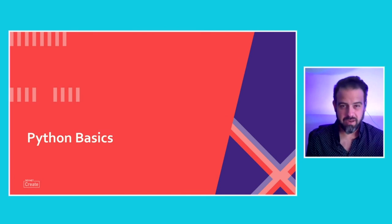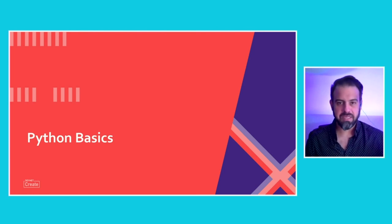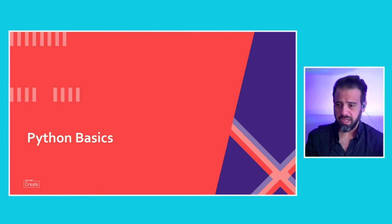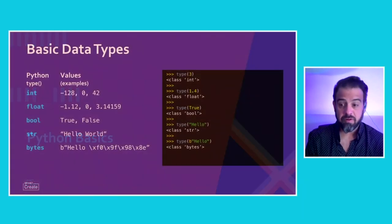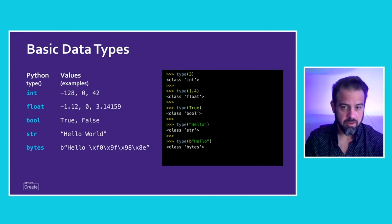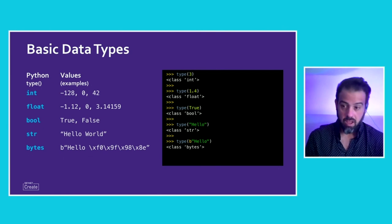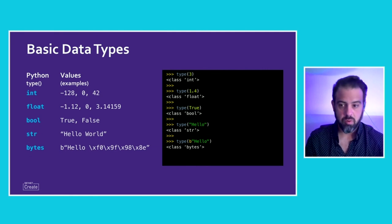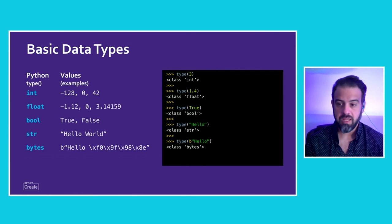We're going to learn some Python basics now. The first thing to worry about when dealing with Python are data types. You'll be working with integers — int — which are whole real numbers like negative 128, 0, or 42. Anything with a decimal is a float, like 1.12 or pi. Boolean values are True or False — capital T and capital F. If you use lowercase, you'll get a syntax error.